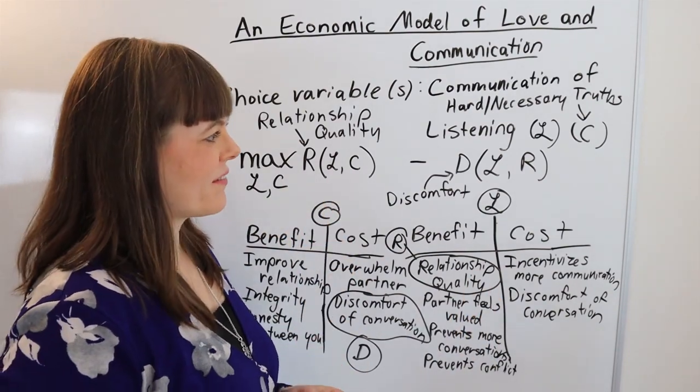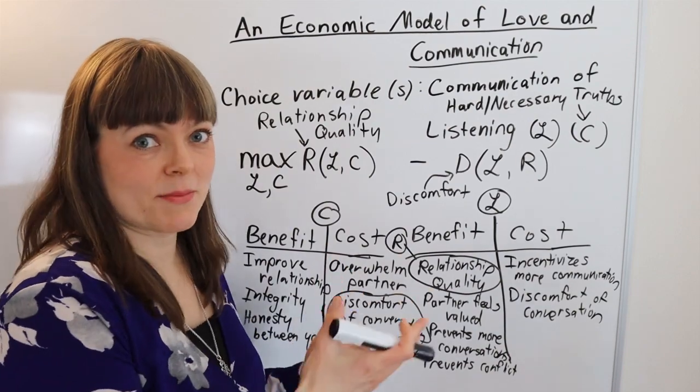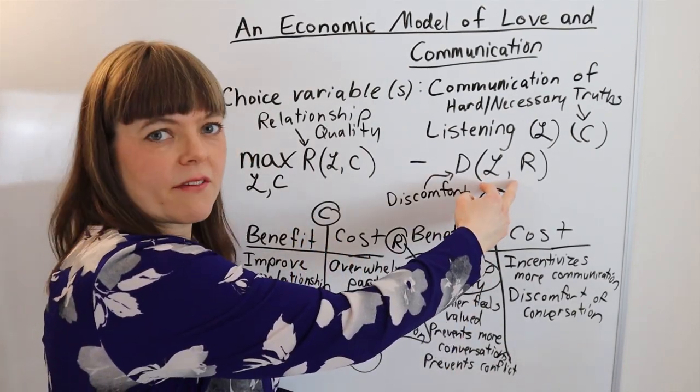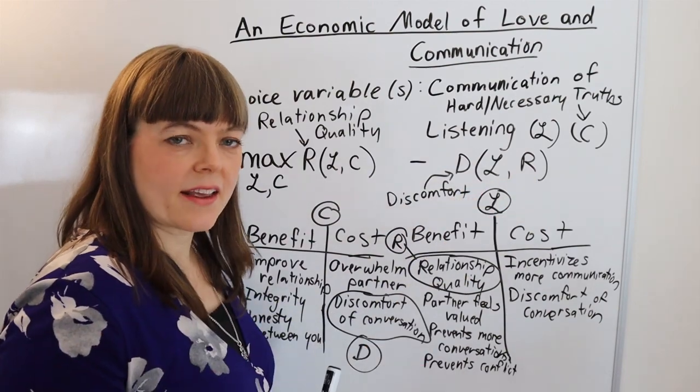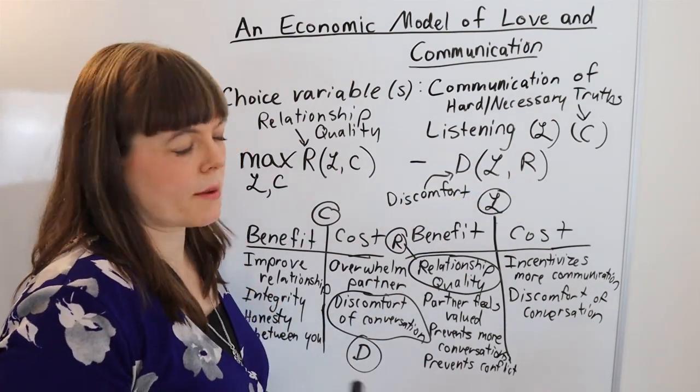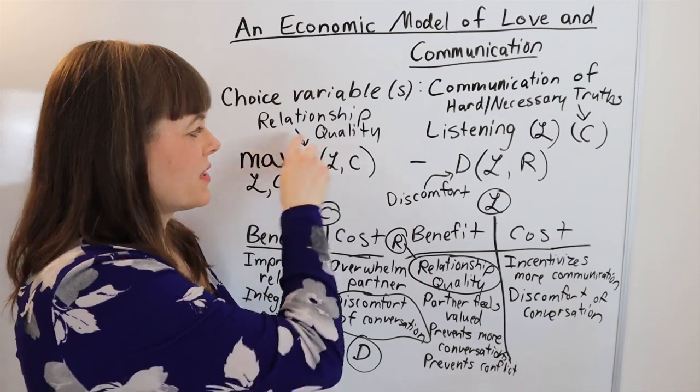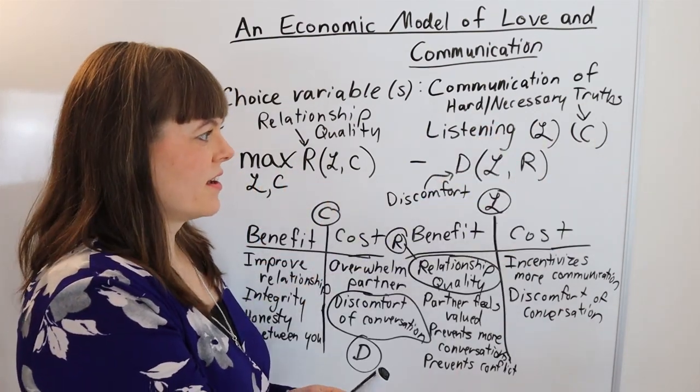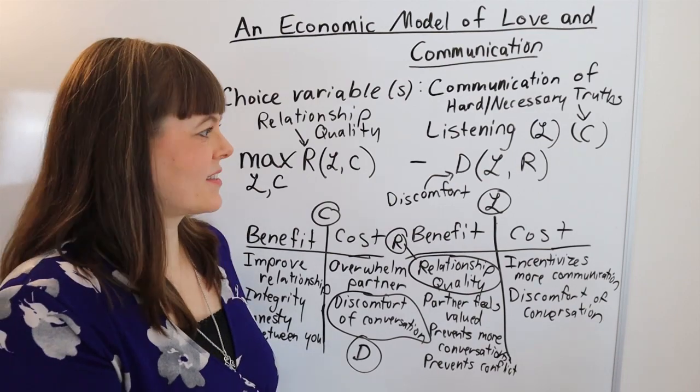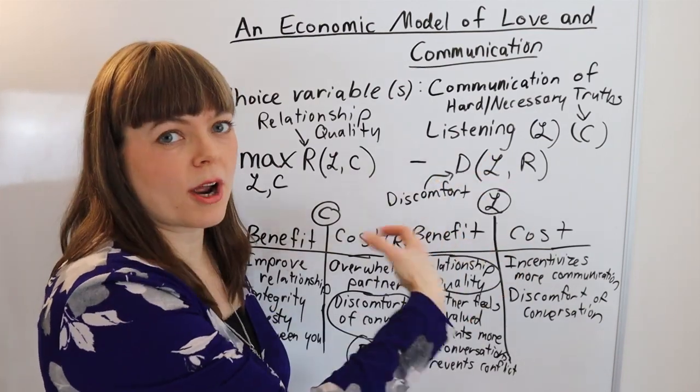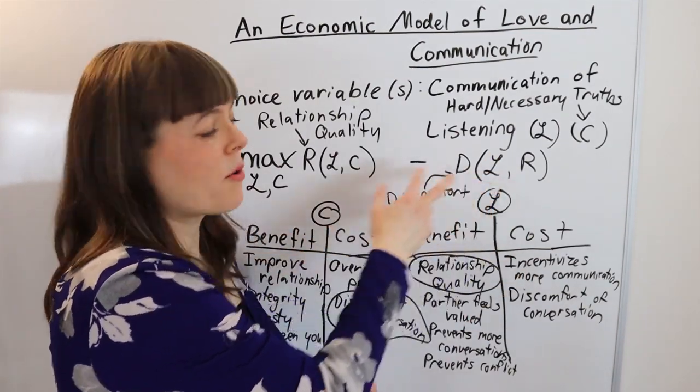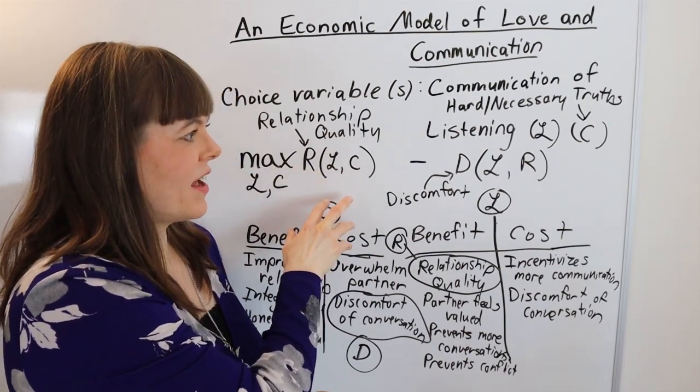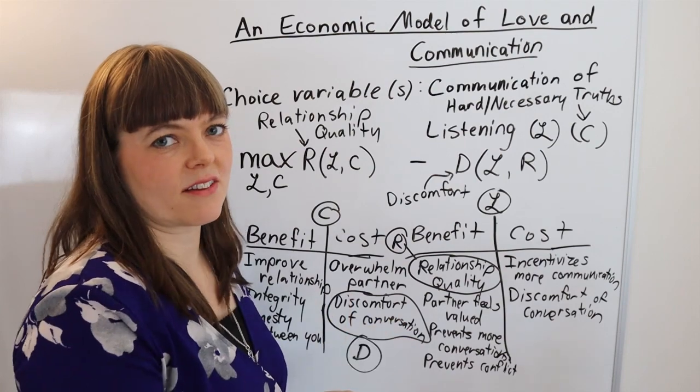Now, of course, we know that one of the issues here, like if we wanted to make this into a time discounted model, the discomfort of the conversation is like one day or maybe it lasts a couple of days or whatever, but the relationship quality is this longterm thing potentially. So if you get a hyperbolic discounter that cares way more about discomfort right now than the long, longterm payoff of this, then you could get a really negative cycle.